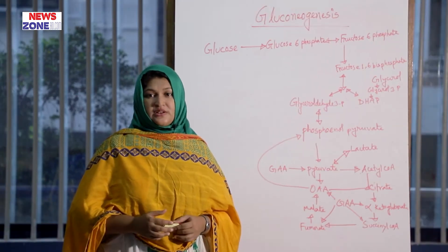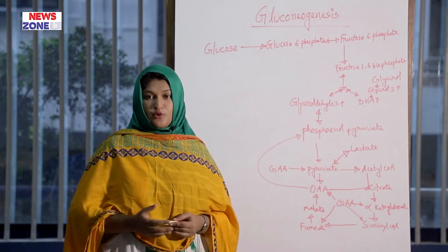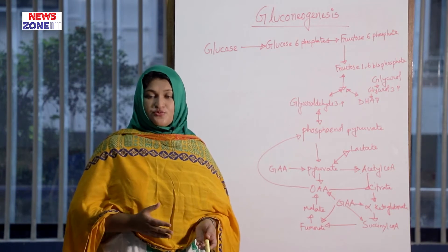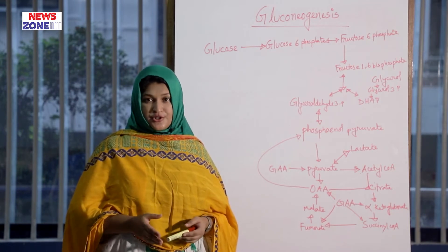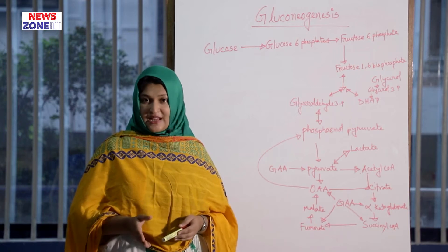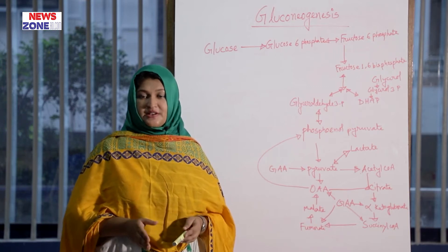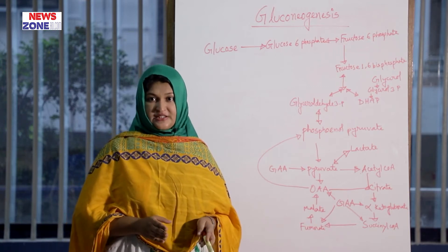Gluconeogenesis is stimulated by glucagon, cortisol, ATP, and acetyl-CoA, and it is inhibited by insulin, AMP, and ADP.